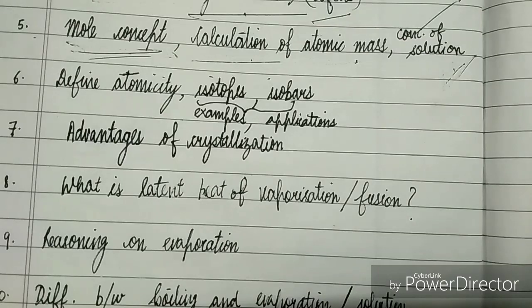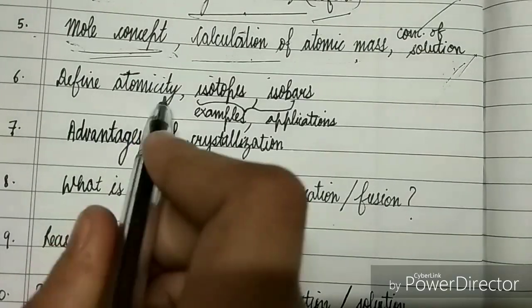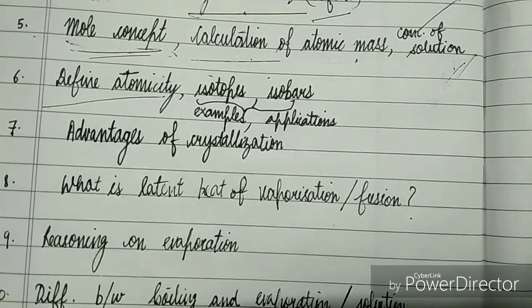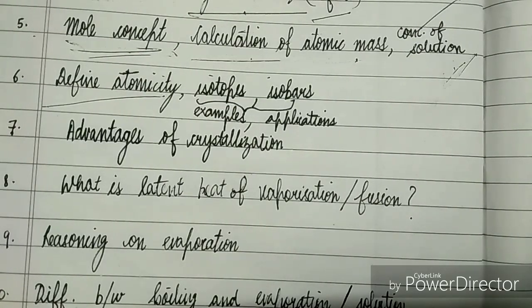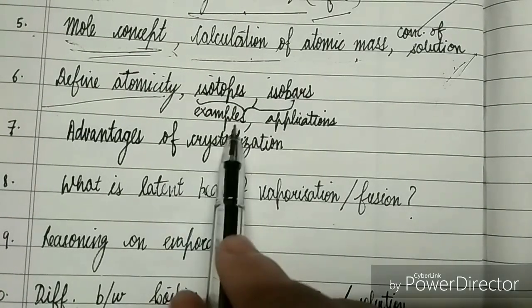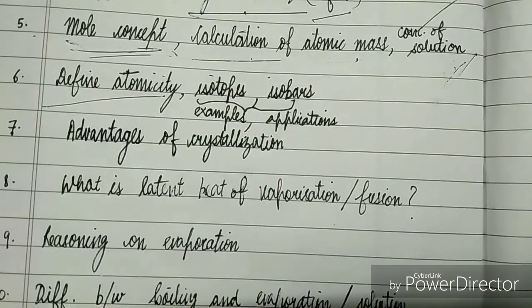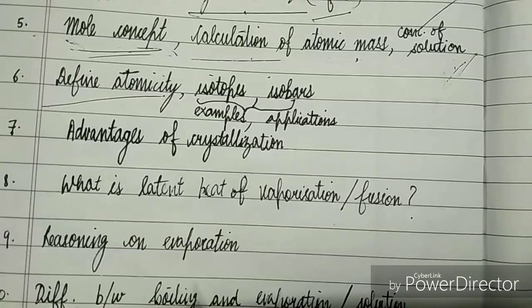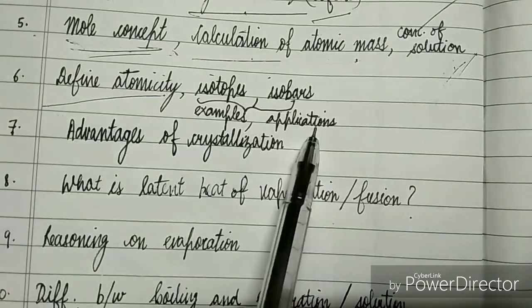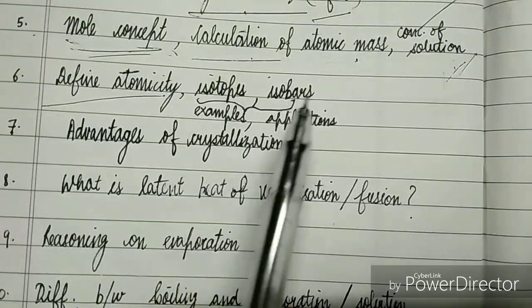Now, going towards the sixth important question, it is the definition of atomicity. Revise it, as it's sometimes asked in the exam. Then you should also know about isotopes and isobars. These are very important parts of the chapter Structure of Atoms. You need to know the examples and applications of both isotopes and isobars.